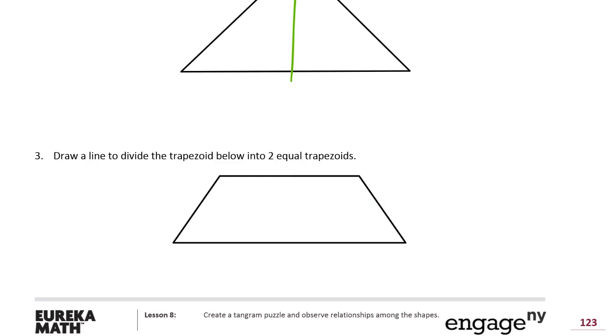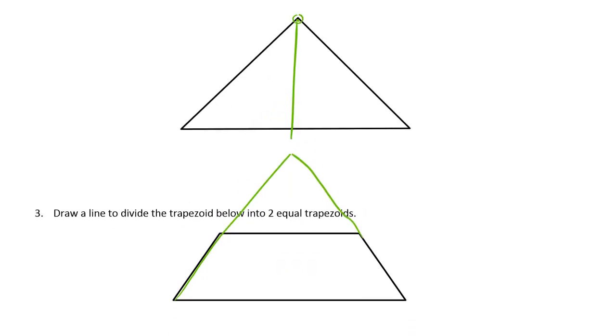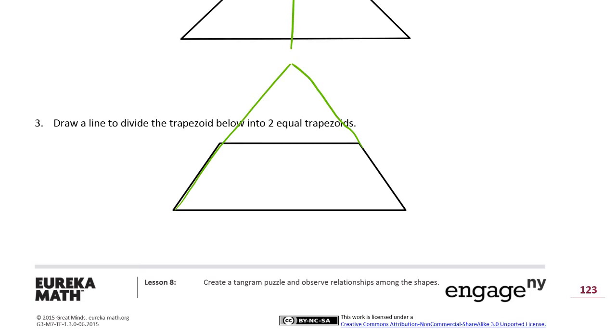This is going to work similar to the triangle we just had. I like to often think of a trapezoid as a triangle with the top cut off. If you extend these lines here, you have almost the same triangle that you had in the problem above. So that's the same kind of line of symmetry that we're going to have.